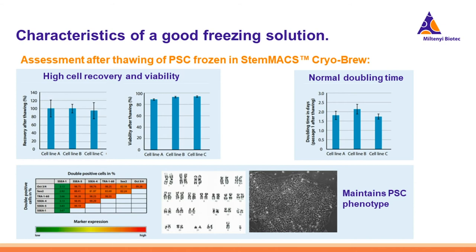After thawing, the cells show a high and reproducible recovery rate, as well as viability, and they do not have a drastic alteration in doubling time. Additionally, PSC lines retain all their typical characteristics.